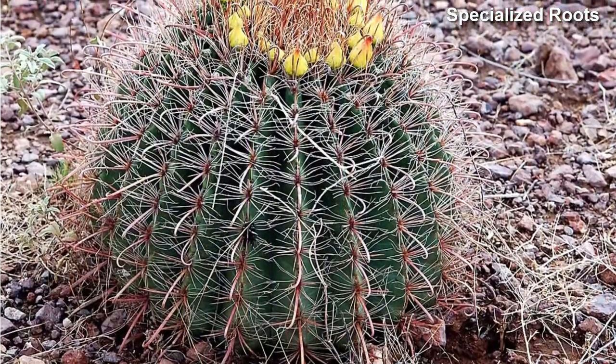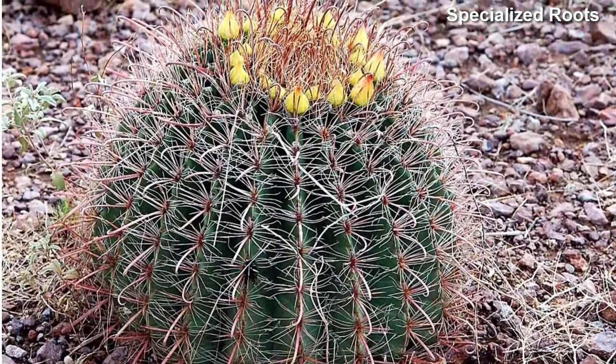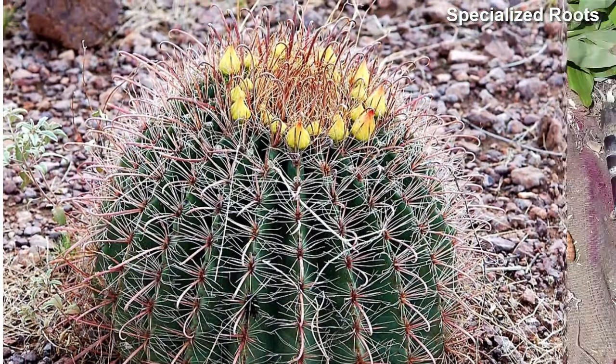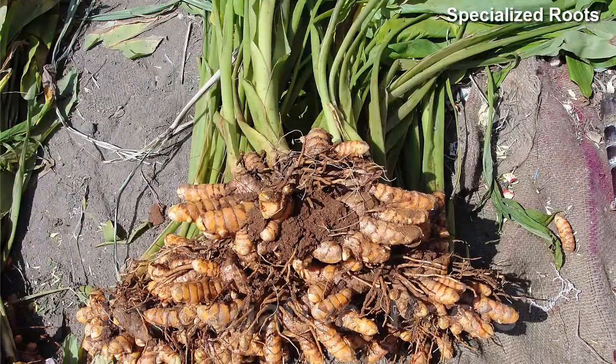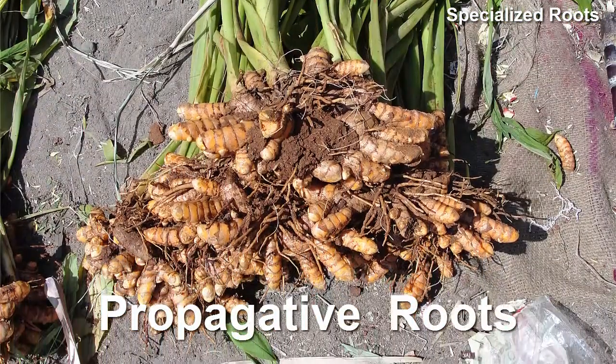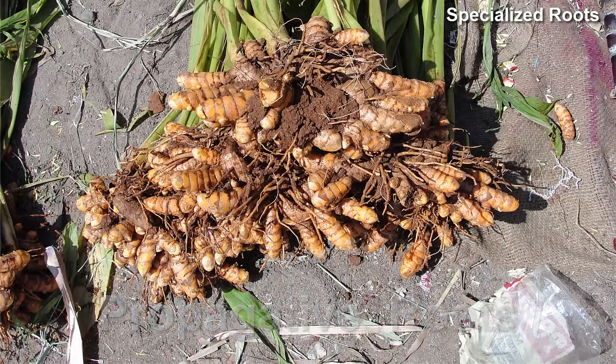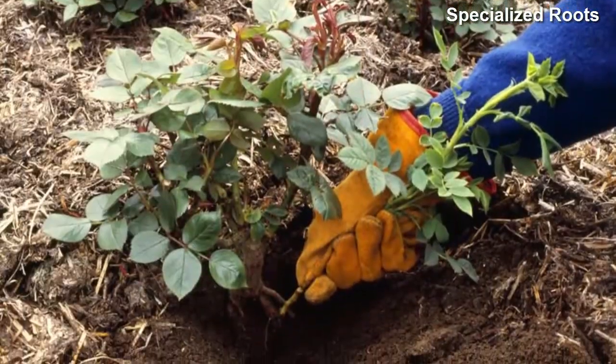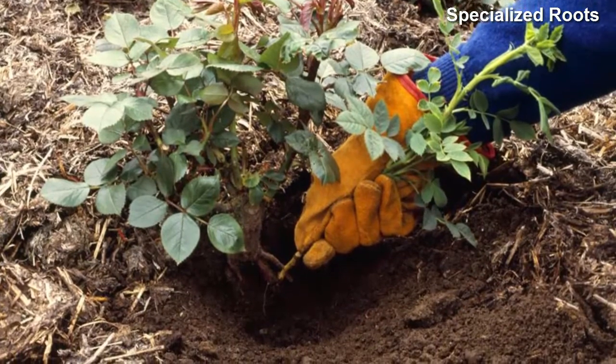Some are modified to store water especially in regions where water is scarce or there is less rainfall. Roots that form buds that can grow into new aerial stems called suckers are called propagative roots. These individual suckers can be separated from the parent plant and grown independently.